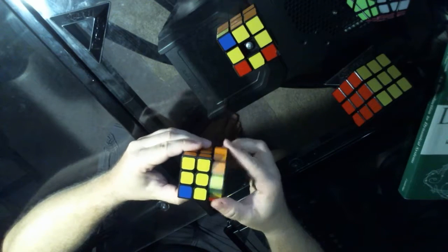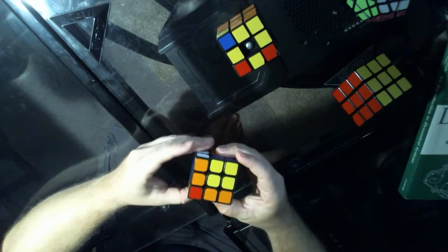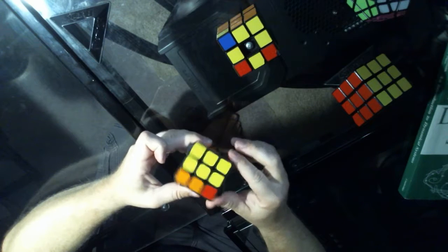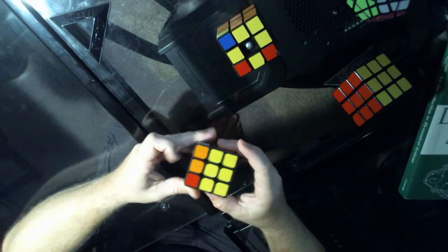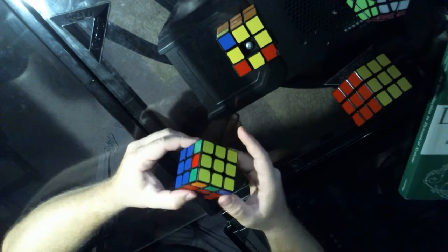So yet again, that algorithm is: a pull on the right, a pull on the top on the right, a pull on the left, a pull on the top on the left, a push on the right, a pull on the top on the right, and a push on the left, and then line up the centers.